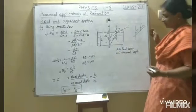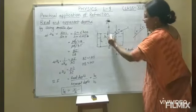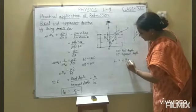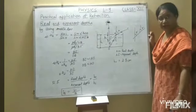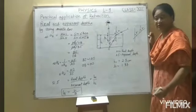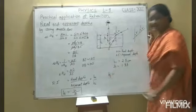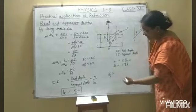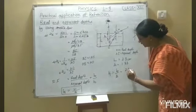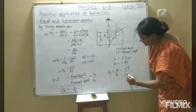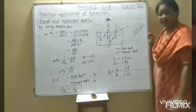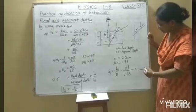Now I will ask one numerical based upon this formula. Suppose the height of the object HO is given as 2.8 cm, and the refractive index of water is 1.33. So what will be the apparent height HI? By using the formula, HI = HO upon mu = 2.8 cm upon 1.33, which is approximately 2.1 cm.